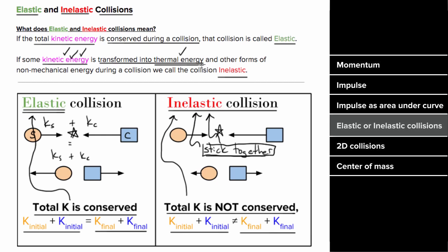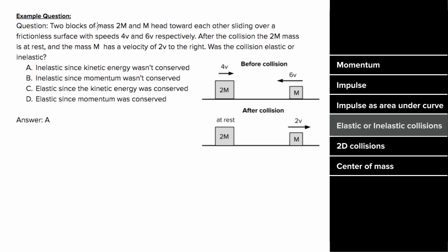So what's an example problem that involves elastic and inelastic collisions look like? Let's say two blocks of mass 2m and m head toward each other with speeds 4v and 6v respectively. After they collide, the 2m mass is at rest, and the mass m has a velocity of 2v to the right. And we want to know, was this collision elastic or inelastic?